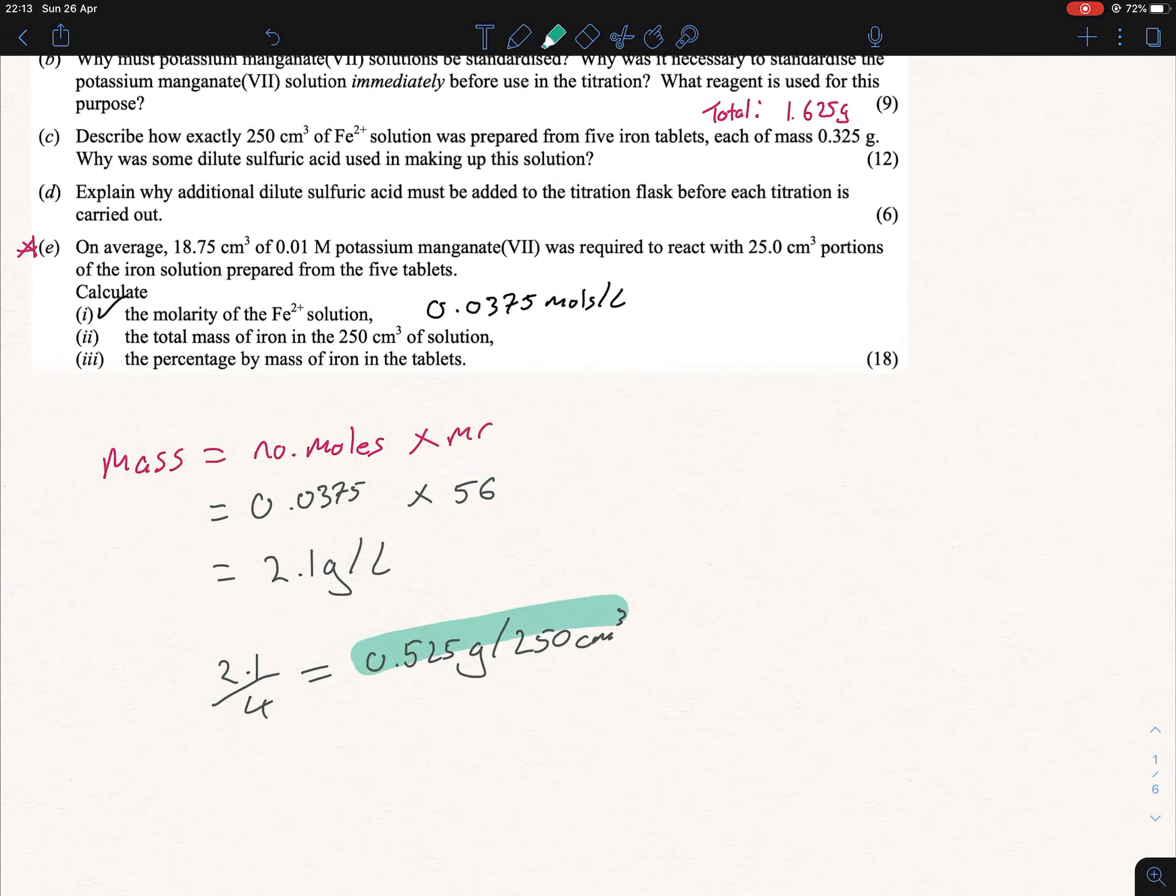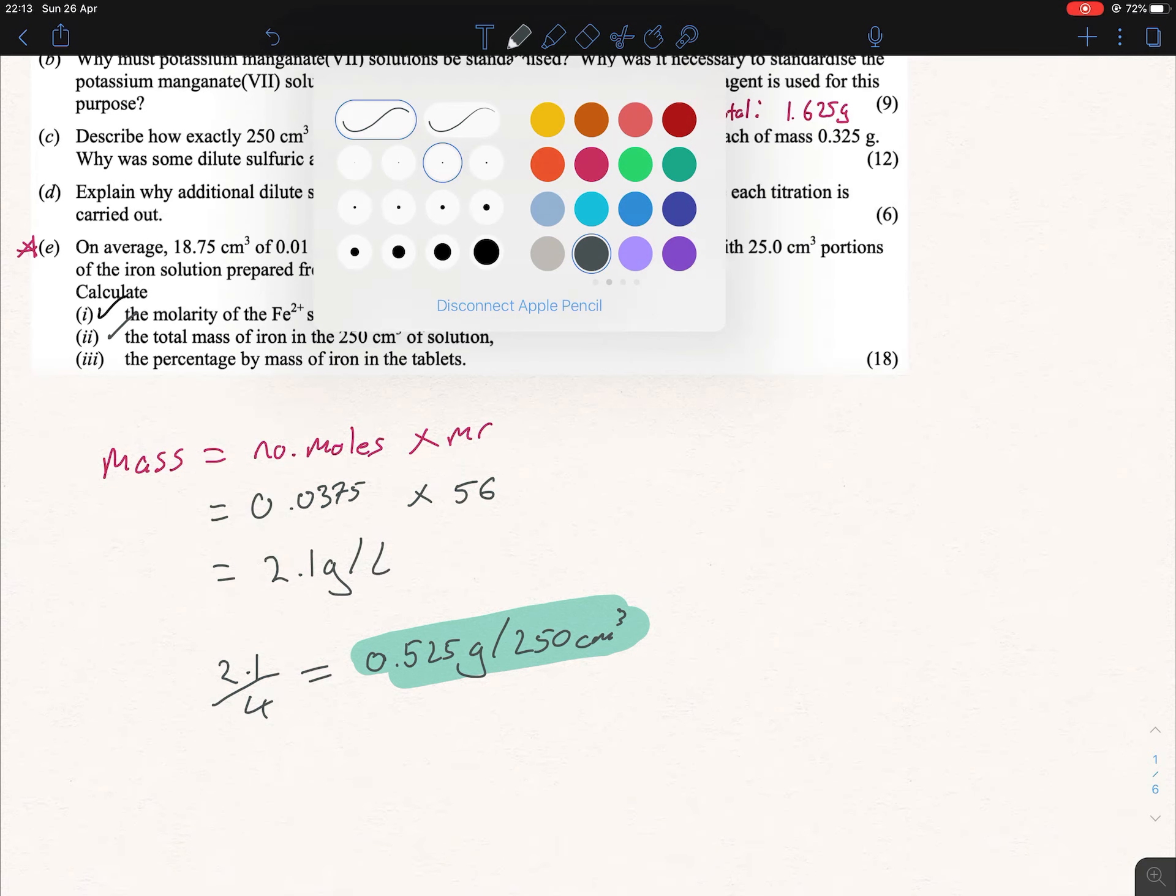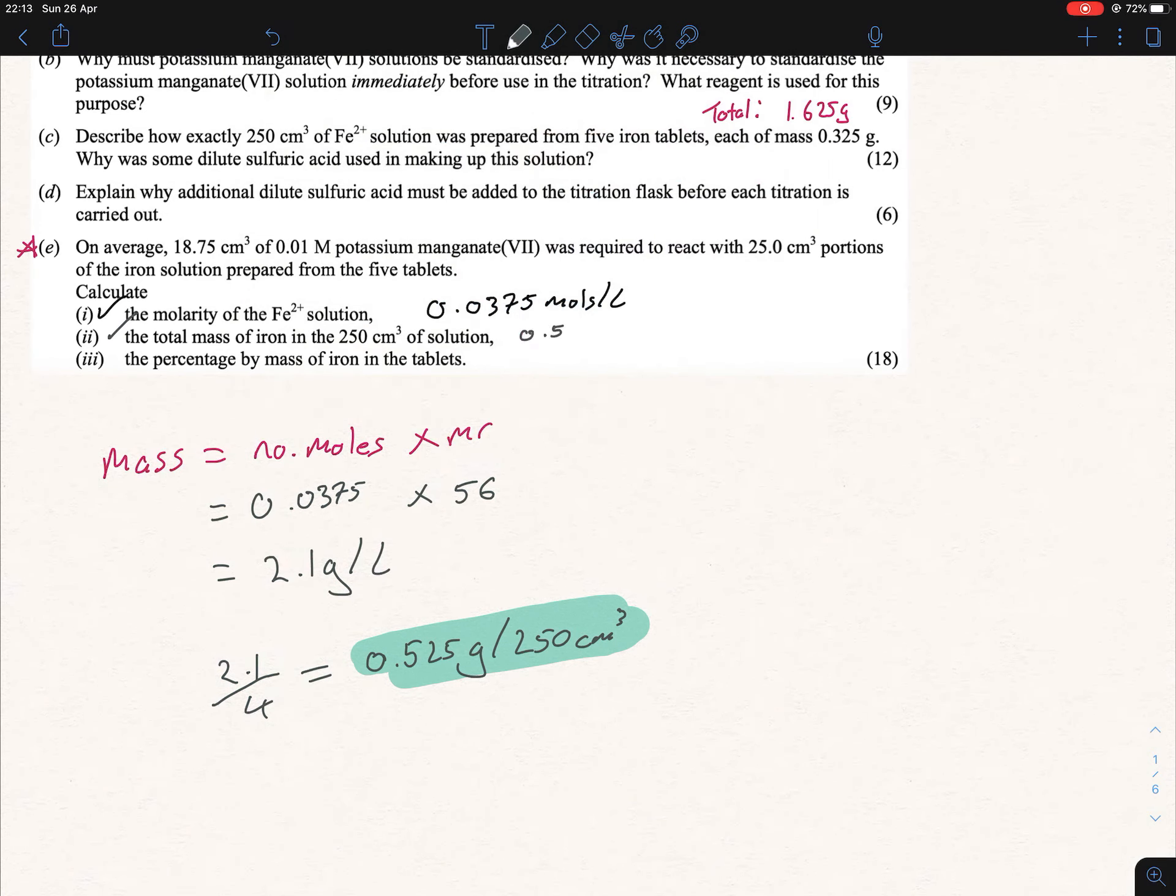Just be careful with that one - you're keeping the units as you're going along. That's why I put it over here. This over here is mass per liter, and that technically shouldn't say number of moles, it should say molarity now. So we now have 0.525 grams per 250 cm³.